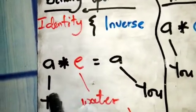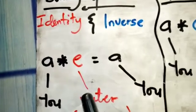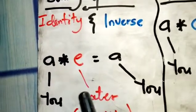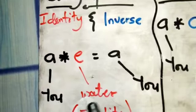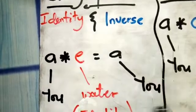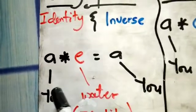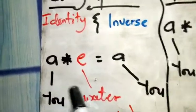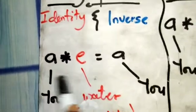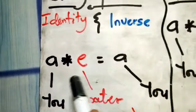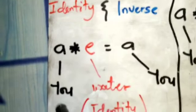In every society or community, there's a rule — a guideline that everyone has to obey, just as in every nation. This is the equation and the way you find the identity element.